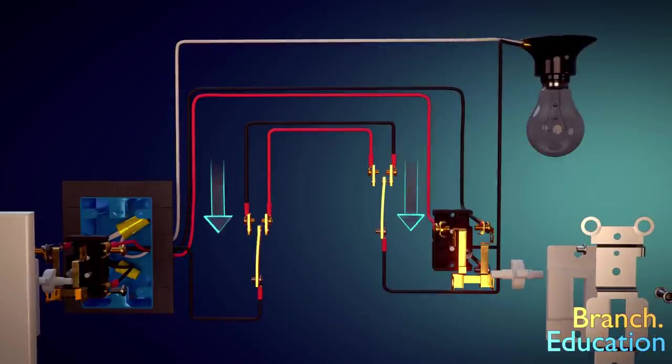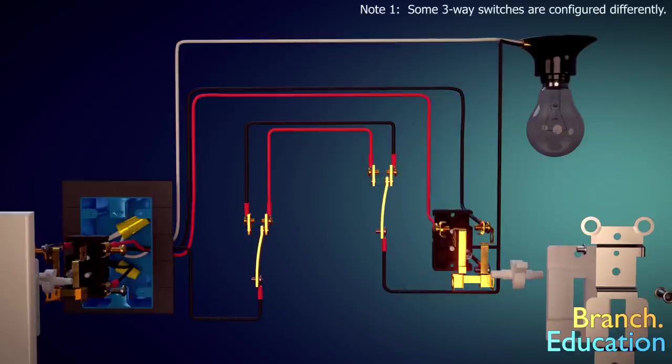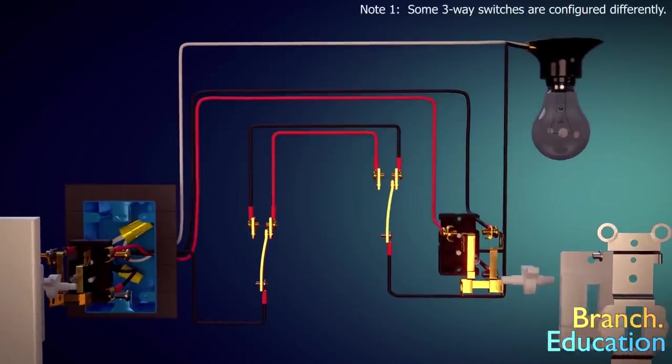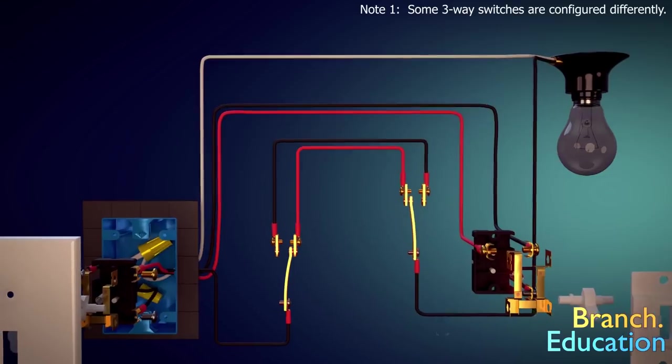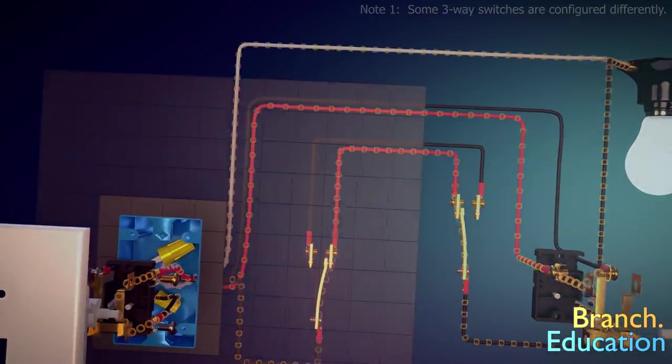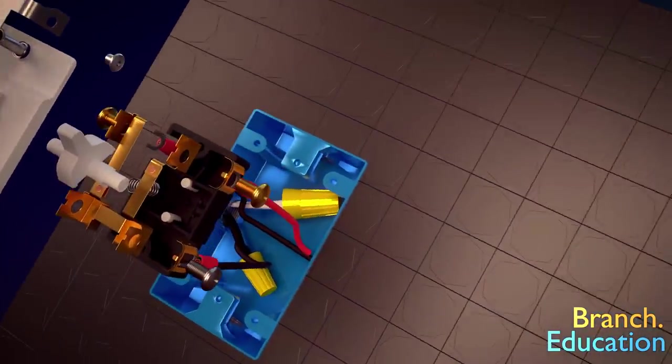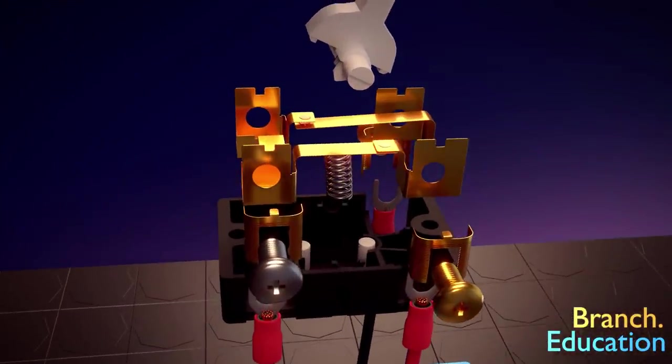In general, if both toggles are flipped down or both toggles up, the light turns off. To turn the light on, one toggle needs to be up and the other down. Let's take a look inside one of these three-way light switches and see what's happening inside.